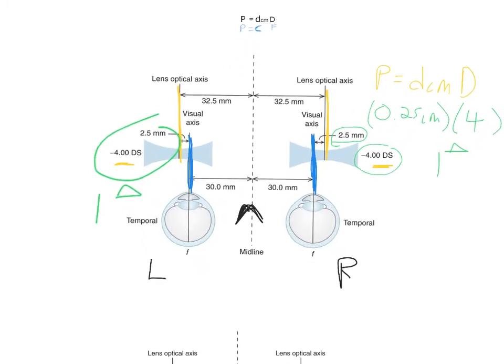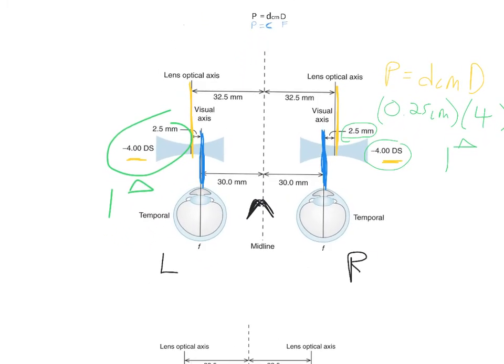Then you combine them. So you have 1 prism diopter in the left eye, base in. And then 1 prism diopter base in in the right eye. So you get a total of 2 prism diopters total induced base in.